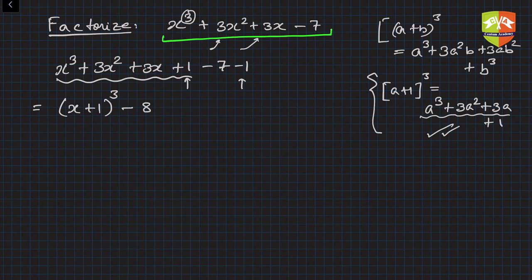Now could you sense something? Yes, so this is (x + 1)³ - 2³. Now we have already learned how to factorize difference of two cubes.